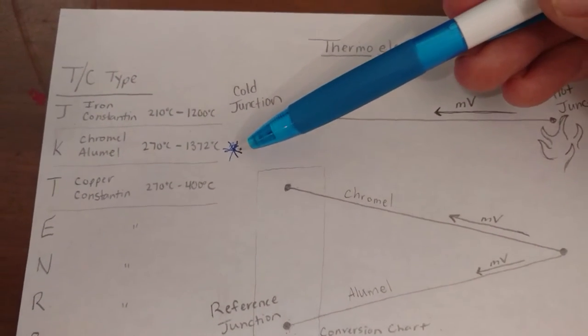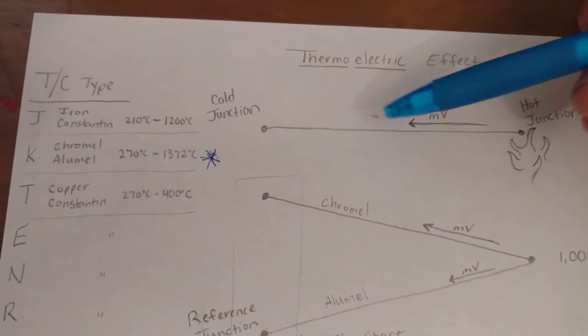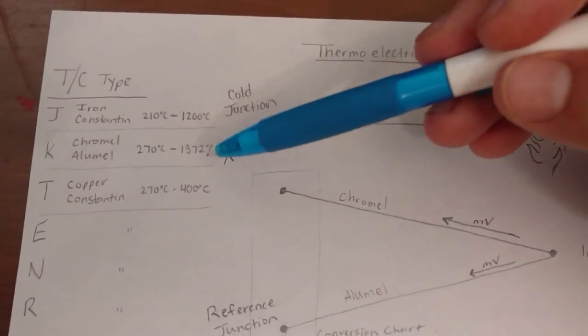Type K is the most common because they're very cheap and have a very wide range of temperature that they can measure.